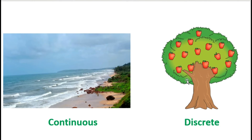For example, if I give you the question: count the number of apples on a tree. Can you count the number of apples on a tree? Yes, possibly it will take some time, but yes, you can count the number of apples on a tree. So that problem statement is discrete — you can count the number of apples on a tree. That is discrete.